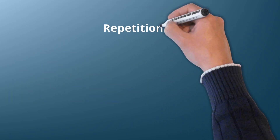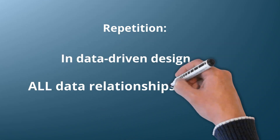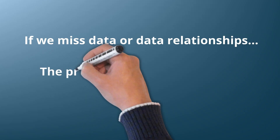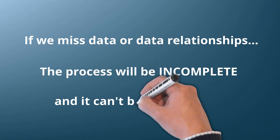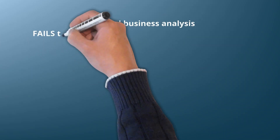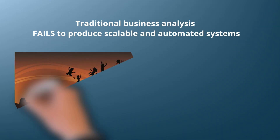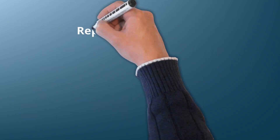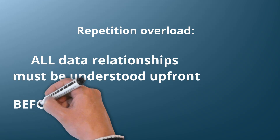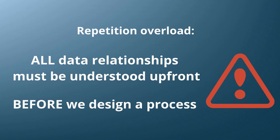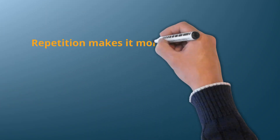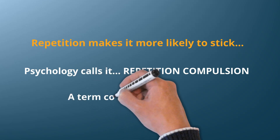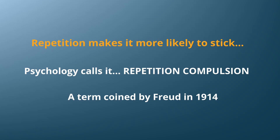This is very important and one of the key differences between functional and process design versus data-driven design: all data relationships must be understood upfront before we design the process. I'll say that again — all data relationships must be understood upfront before we design the process. If we use data to design a process and we miss data, the process will be incomplete and it can't be automated, or not fully automated. Traditional business analysis fails to produce automated and scalable systems because it doesn't try to unpack the required data and data relationships upfront. By repeating it three times, it's more likely to stick — psychology calls this repetition compulsion, a term coined by Freud in 1914.